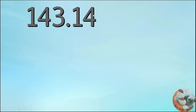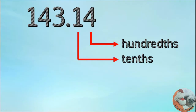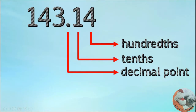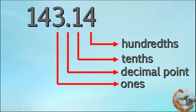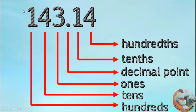So let's review the place value of decimal numbers. We have 143 and 14 hundredths. The place value of 1 is hundreds. Then we have the decimal point. This number is placed at the ones digit. Next is the tenths digit. And the last one is the hundredths digit.